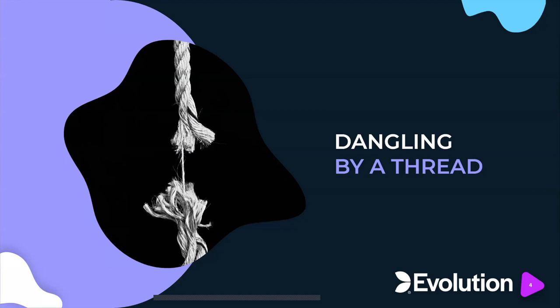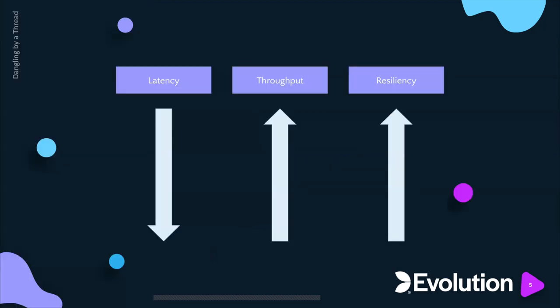Section number one: dangling by a thread. What does every business want? They want low latency, massive throughput, and resiliency — especially in this day and age when so many dollars are flowing on the electrons connecting our houses and businesses. There's real money involved in every single request. We want to process incoming requests from smartphones and sensors with super low latency and very high throughput, and to do so in a resilient way.